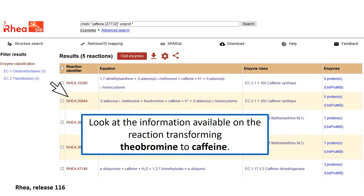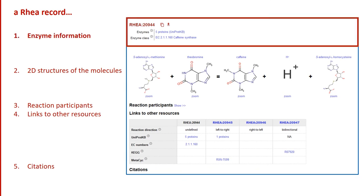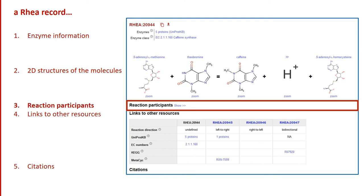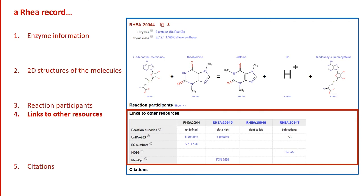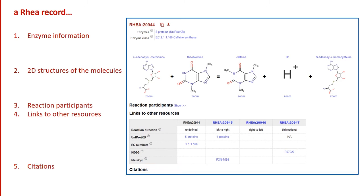Let's take a look at the reaction transforming theobromine to caffeine. We can access the reaction page by clicking on the RIA identifier. A reaction page is composed of five parts: enzyme information, the 2D structure of the molecules involved in the reaction, information on reaction participants, links to other resources, and finally the bibliographic references that have been used to curate this reaction.